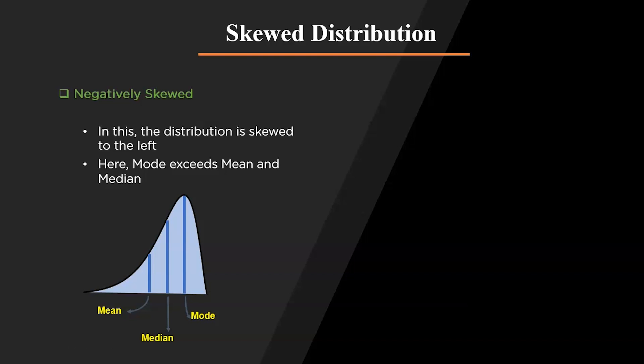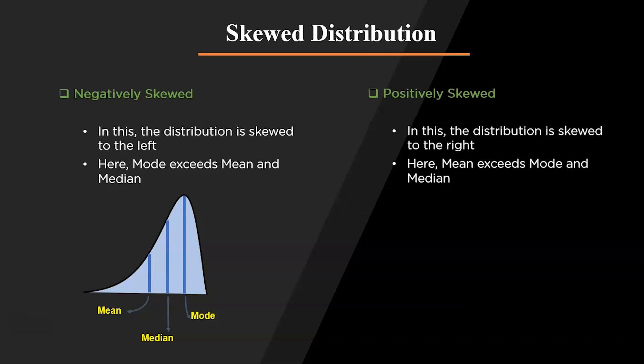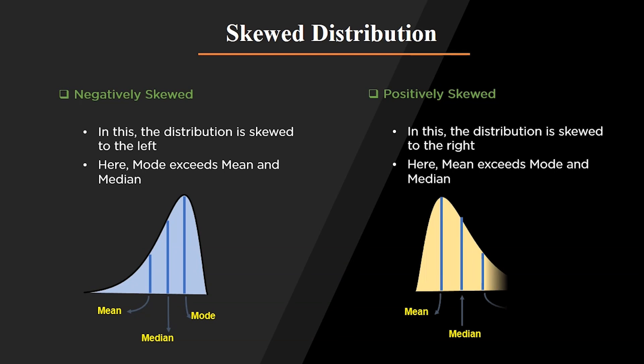In a positively skewed distribution, the values are more concentrated towards the right side and the left tail is spread out, as you can see in the graph. Hence the statistical results are bent towards the left-hand side. Therefore the mean, median, and mode are always positive. In this distribution, mean is greater than median and median is greater than mode.